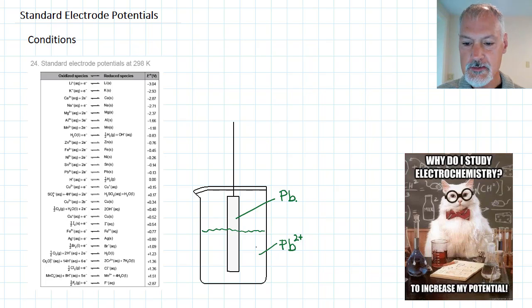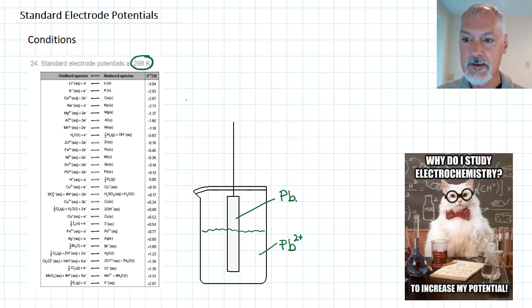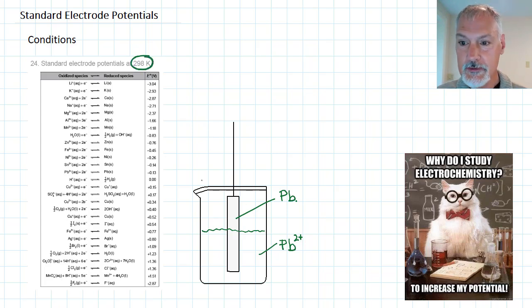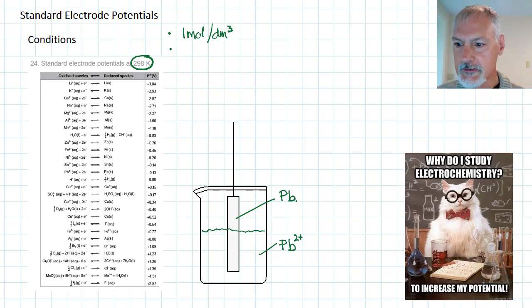Now a few features about this table that we use, called the standard electrode potential. First of all, this experiment must be conducted at 25 Celsius or 298 Kelvin. The solution has to be one mole per liter. Now a few of these you'll notice don't necessarily involve solutions.